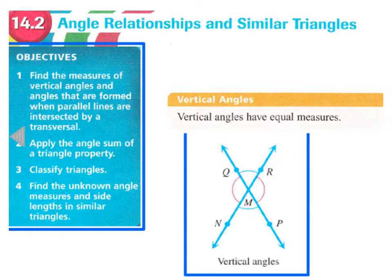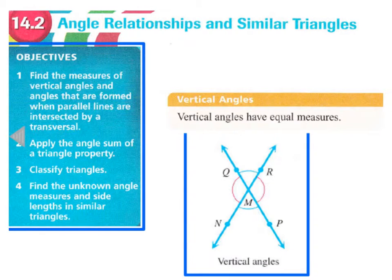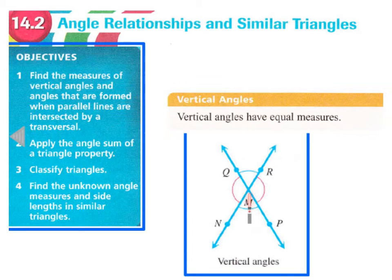Today we're looking at angle relationships and similar triangles. We've got a few objectives on the left side, and then an important property here: that vertical angles have equal measure. Vertical angles happen when we have any two lines that intersect, and the angles that are on opposite sides are the vertical angles.